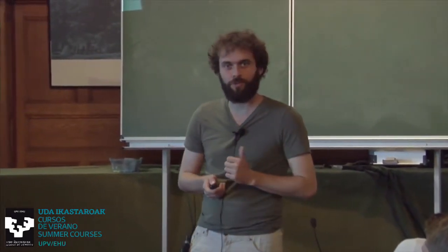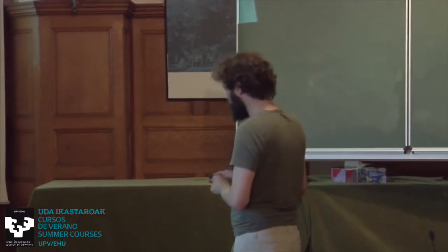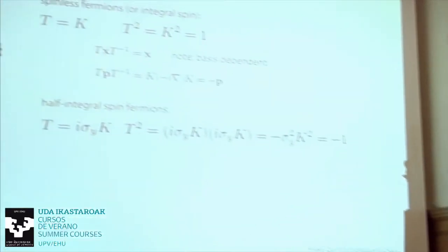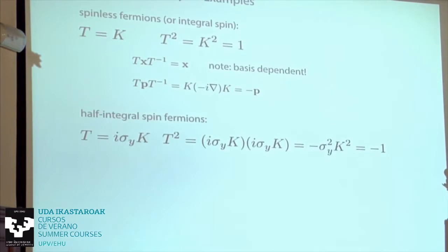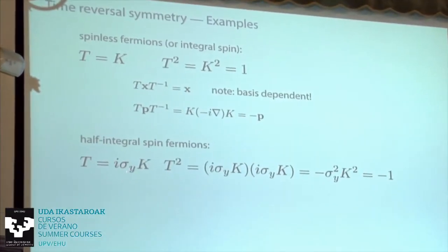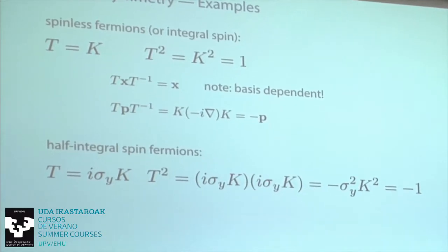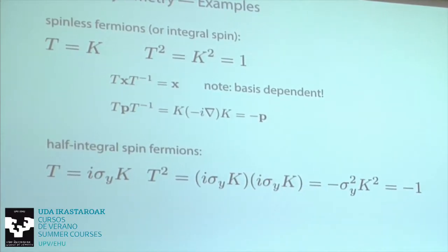If I have spin — or pseudo-spin — I need something more. I have a matrix: iσ_y times complex conjugation. This squares to minus one, as you can verify over cocktails.